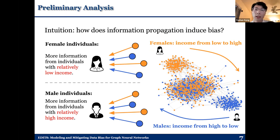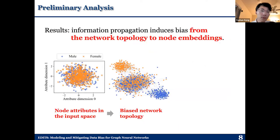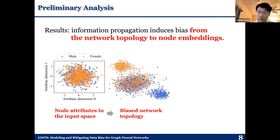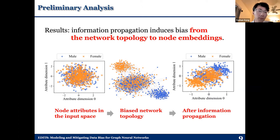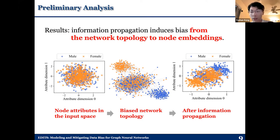So how does the information propagation operated on such a topology look like? We generated unbiased attributes for these two gender subgroups, and then we perform information propagation based on the biased network topology we discussed before and the generated unbiased attribute distribution. It turns out that after information propagation, even if the input attributes across the two gender subgroups are unbiased, we still get a biased distribution after information propagation is performed on a biased network topology. Additionally, if we use biased attributes to perform the information aggregation, we will still get biased attributes after information propagation.